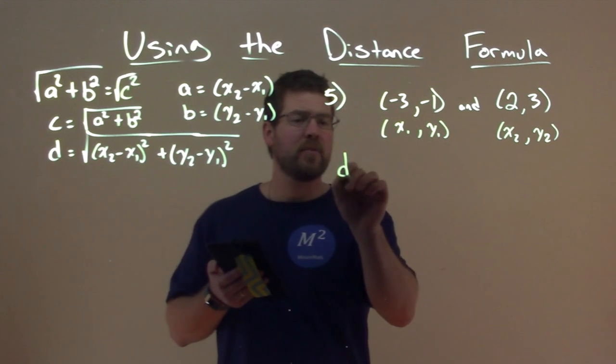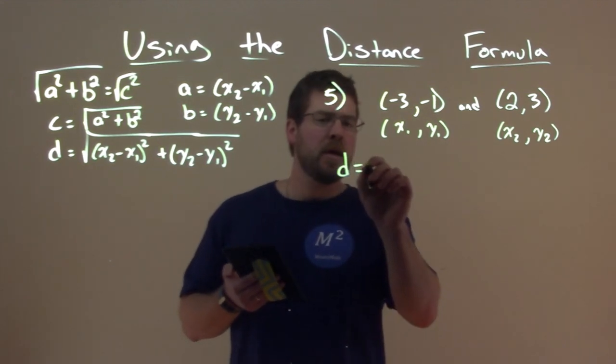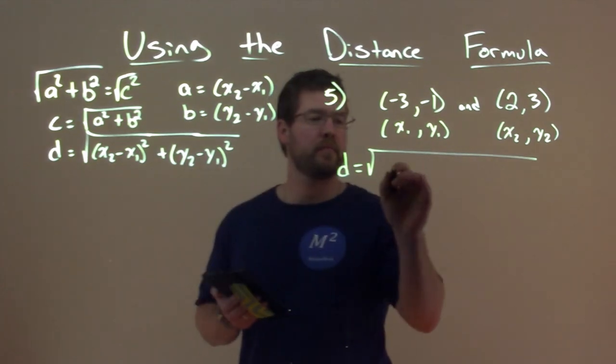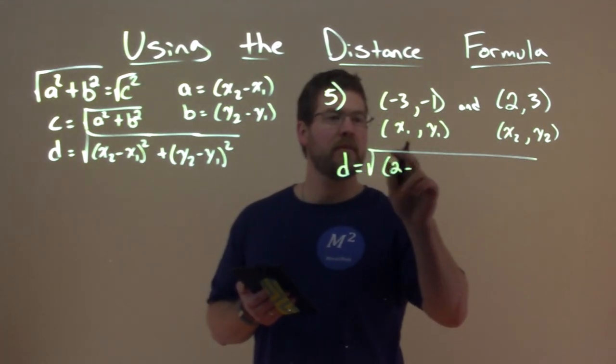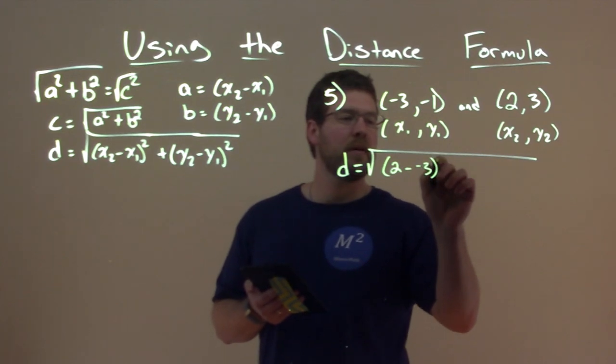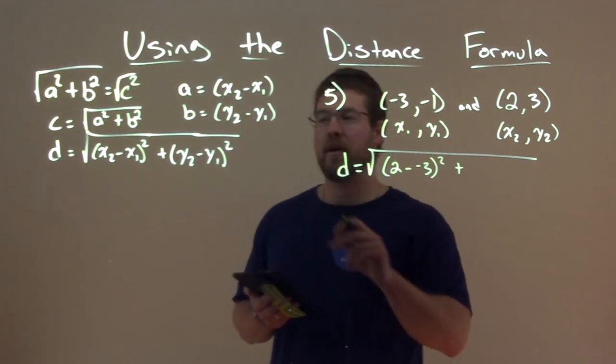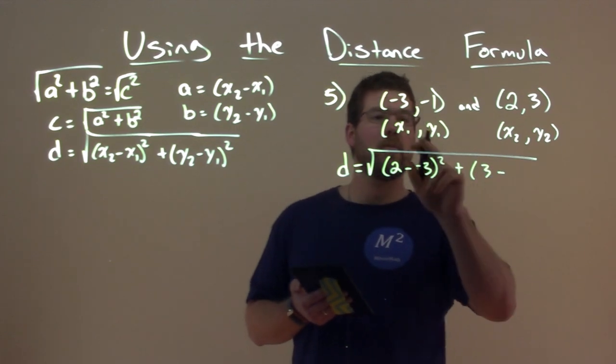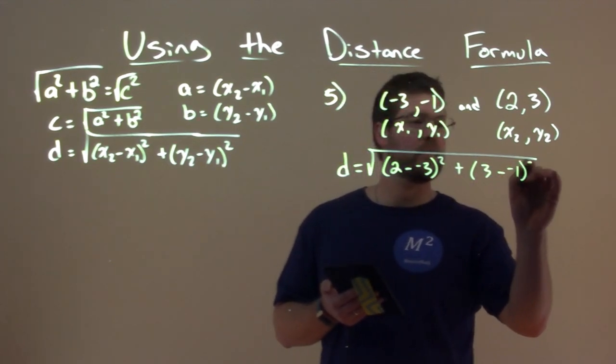So let's use our formula. It's really a plug and play here. d equals the distance, the square root of, right here, x2, which is 2, minus x1, negative 3, squared, plus, now we have y2, y2, which is 3, minus y1, which is negative 1, squared.